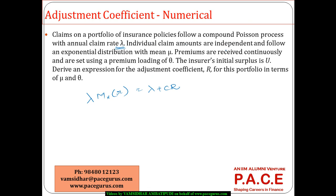Individual claim amounts are independent and follow an exponential distribution with mean mu. The mean of the exponential distribution is mu, which means the rate parameter lambda of the exponential is one by mu.